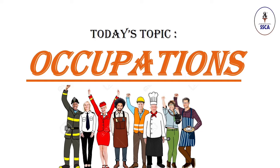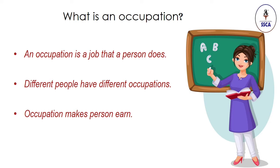Students, today we are going to learn about occupations. Today we will know what is an occupation and different types of occupations. Everyone has to work to earn money. That work becomes his or her job. So occupation is a job that a person does. Different people have different occupations. We will learn about different occupations in this video.